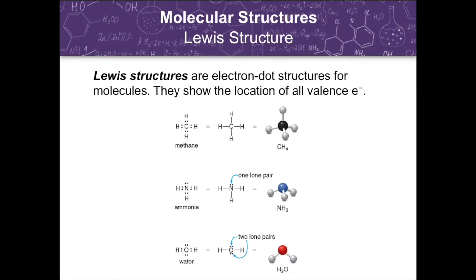Lewis structures, remember, are electron dot structures for molecules. They show the location of the valence electrons of the atoms in the compound. As you can see here, we have the Lewis structures for methane, ammonia, and water.